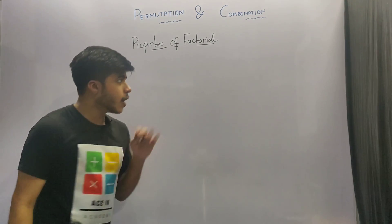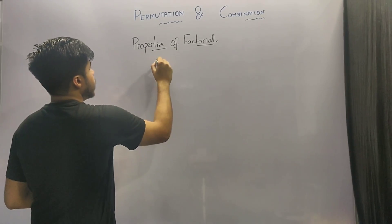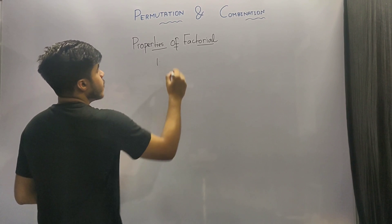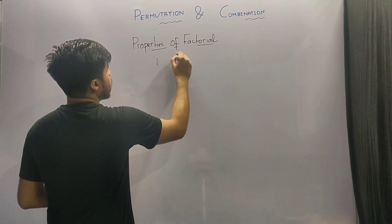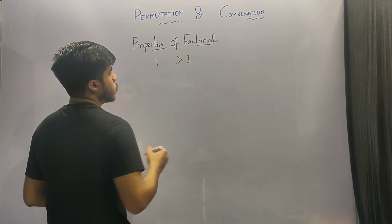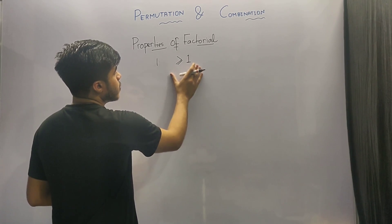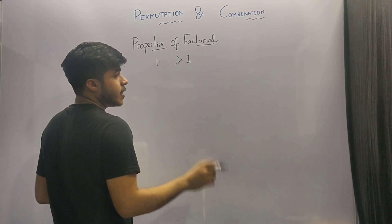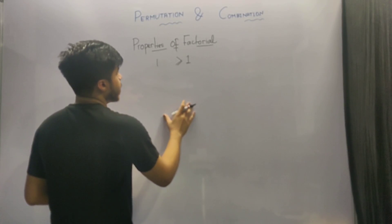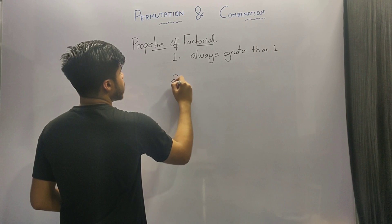Our first property for factorial is that factorial of a number is always greater than or equal to 1. So factorial of a number can neither be 0 nor negative.